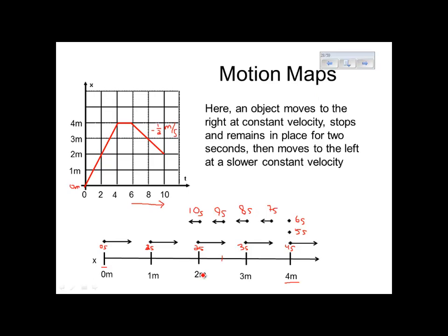And this is the description of the motion. So if you're given a position graph, you can see how you should be able to get the motion map, which tells the same story, and vice versa. If you're given a motion map, you should be able to make the position versus time graph. So these are interchangeable, and you should be able to go from one to the other.